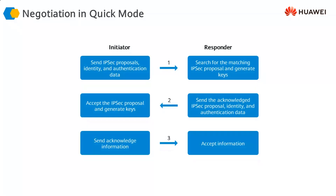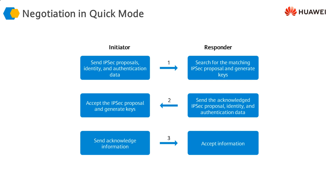Phase two of IKEv1, called quick mode, is where IPsec security associations are developed. The initiator sends the IPsec proposal, identity, and authentication data. The responder checks whether the parameters match and sends a confirmation, which the initiator acknowledges. An IPsec SA is then developed between the two sides. All communication in quick mode is encrypted and secure because IKE has already established a secure channel between the two sides.